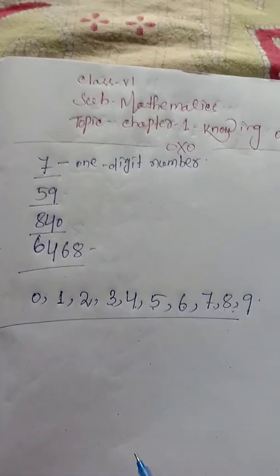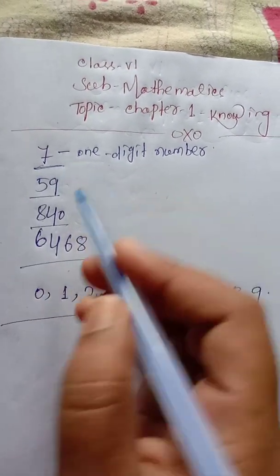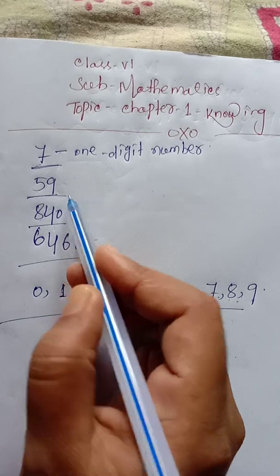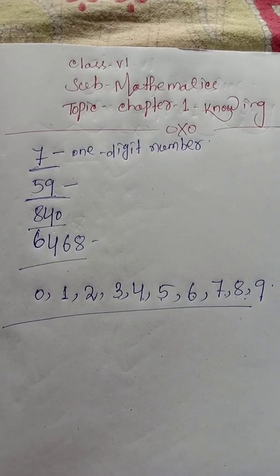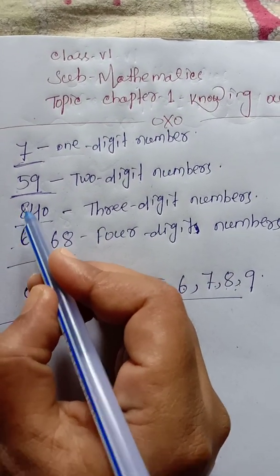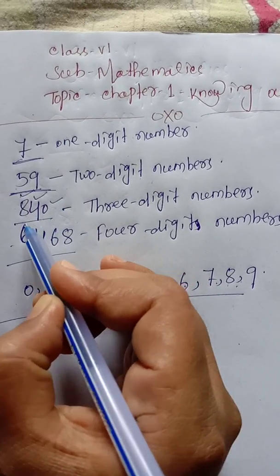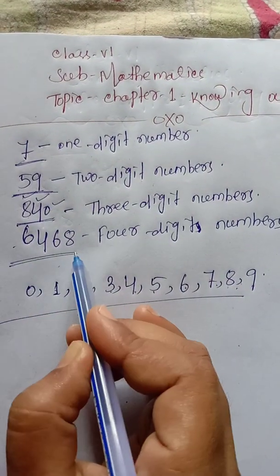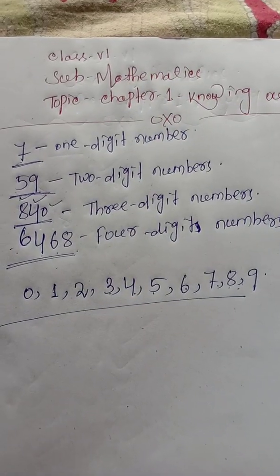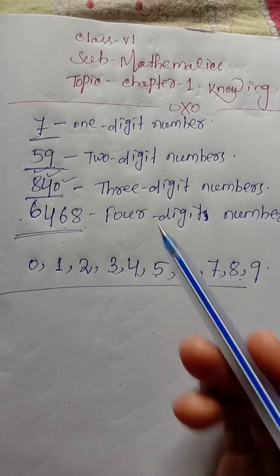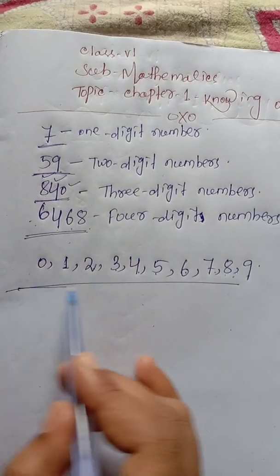Here is 7. 7 is a one digit number, so it has only one digit. Similarly, 59 is a two digit number, so it has two digits: 5 and 9. So it is called a two digit number. We will write different numbers by using different digits from these 10 digits.